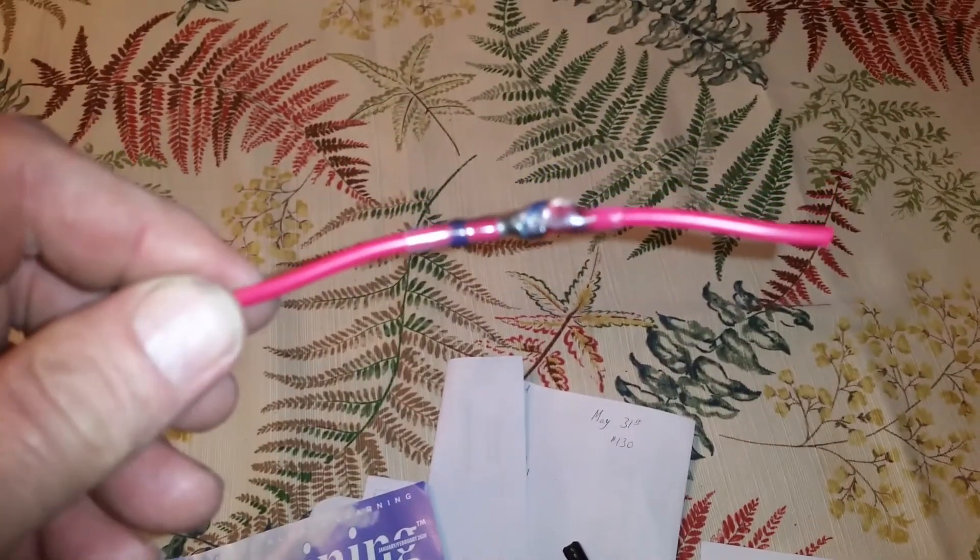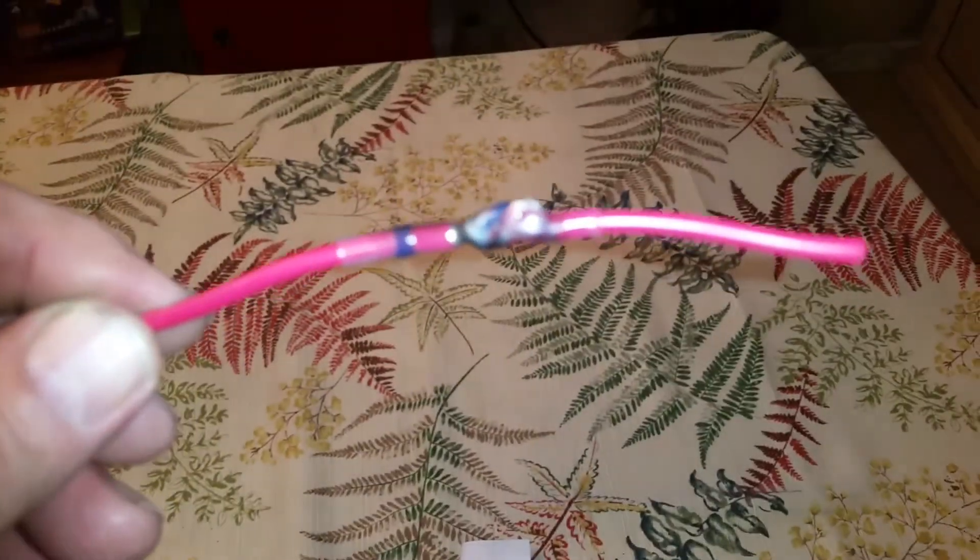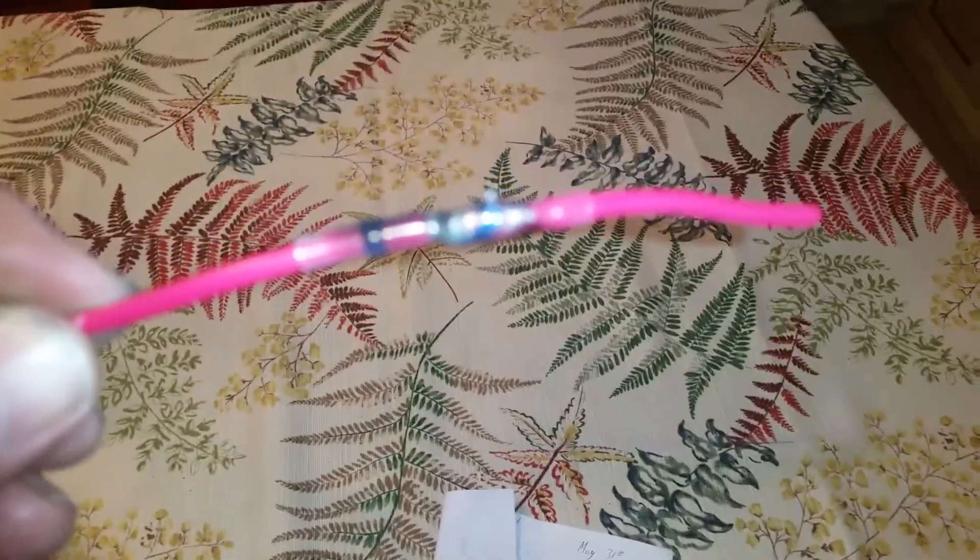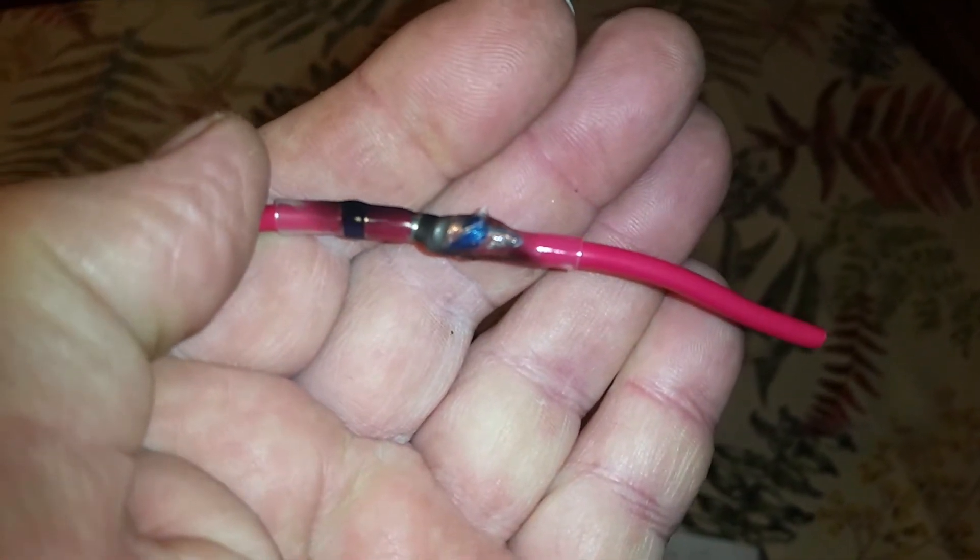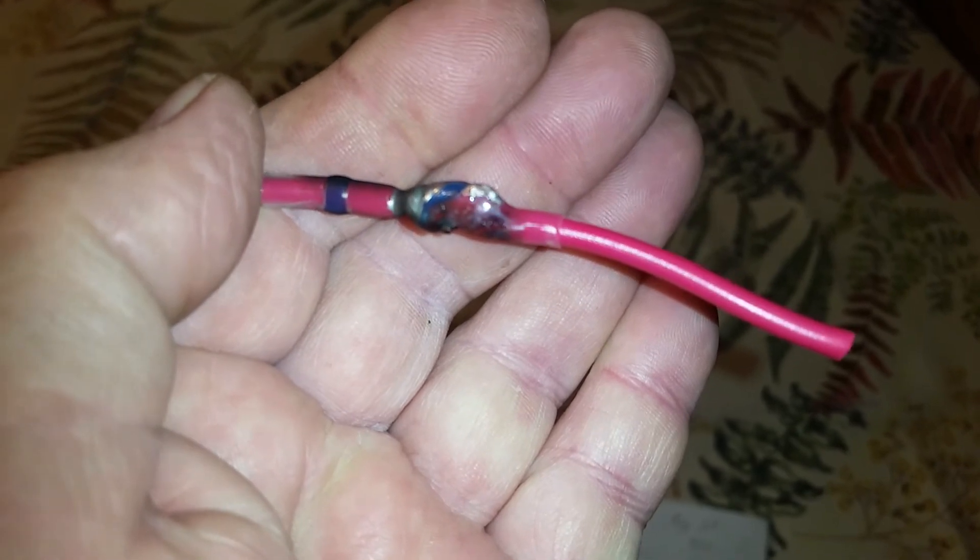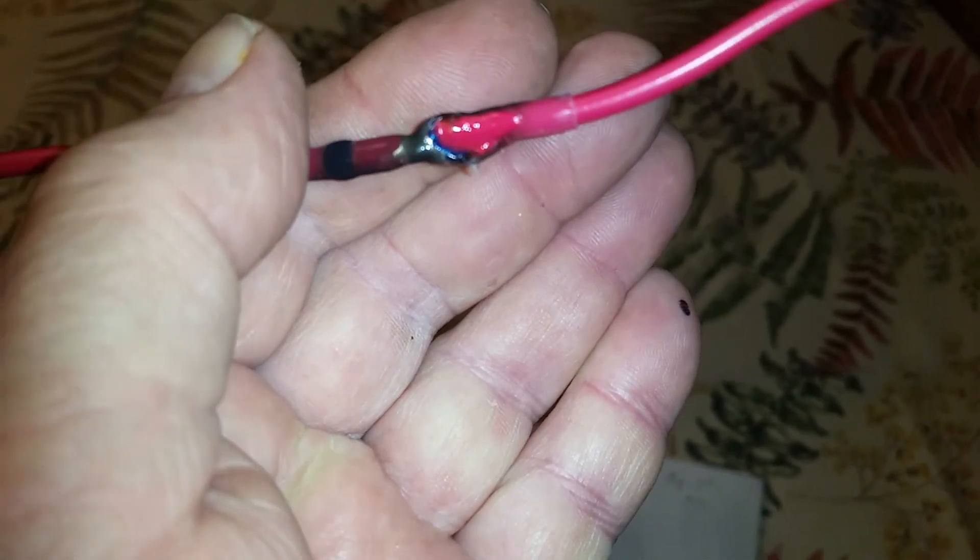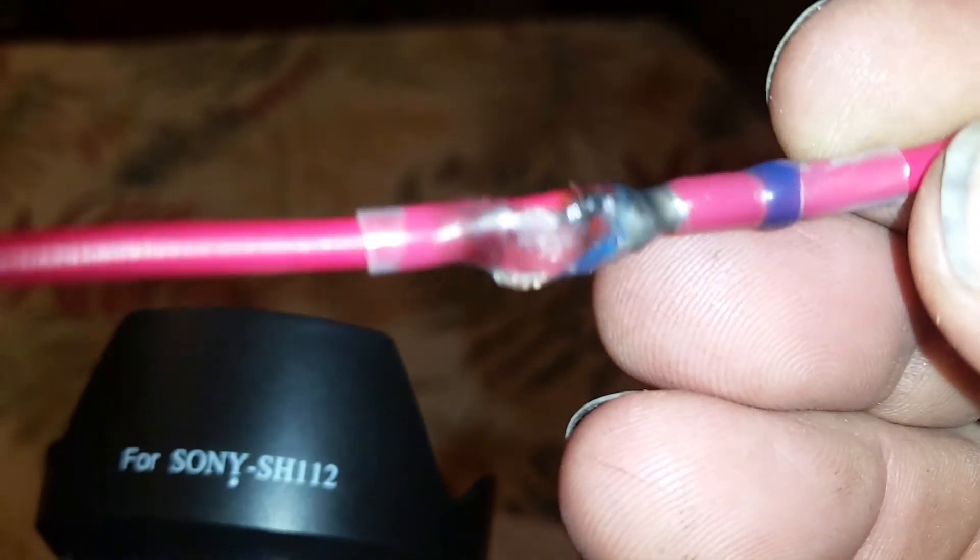Now here's a better look with better lighting at the final result. And after I filmed this I did cut the joint apart as best as I could and there was a good amount of solder penetration into the copper filaments of the wire. So I'm confident that this is a good joint. It just looks bad and kind of burnt.